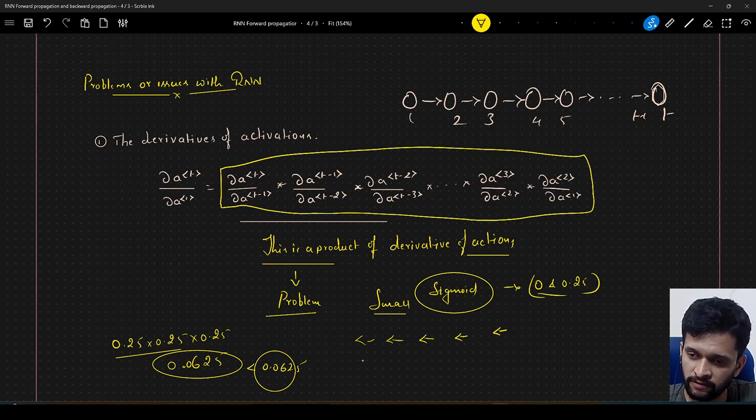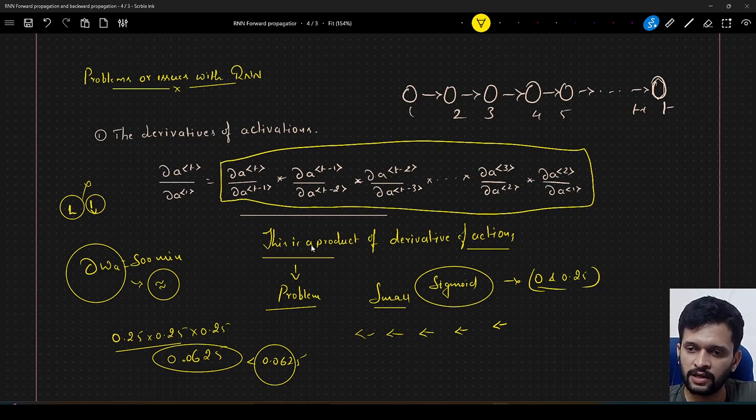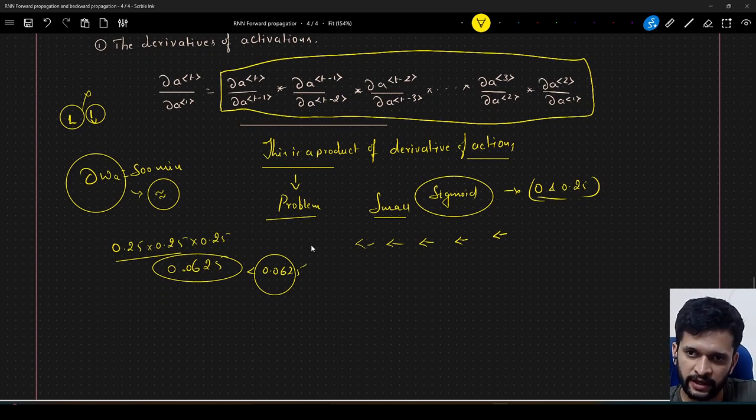So the gradients will become so small that the updates to the weights, DWA will be so minimum that even without update, the value seems to be almost equal, right. So what happens with this? The loss will remain as it is, we will not see reduction in the loss. So this is what is called as vanishing gradient problem. So with respect to RNNs, we may face vanishing gradient problem.